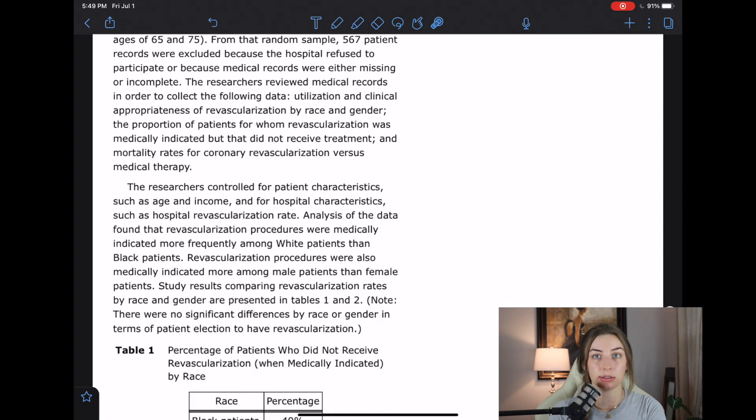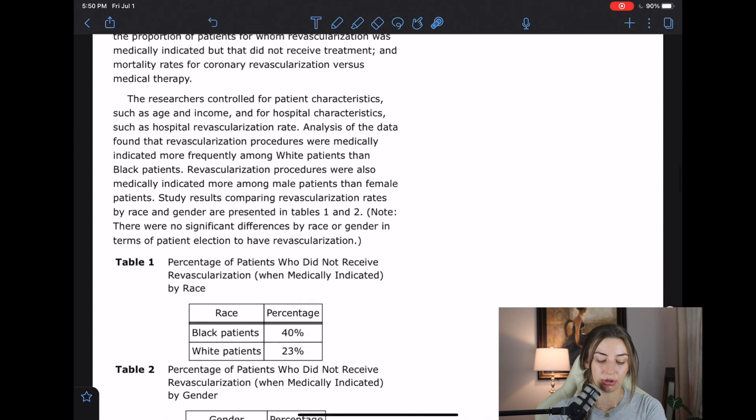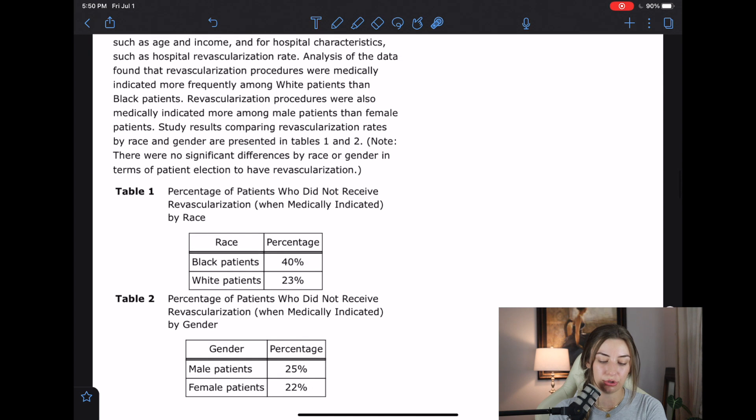So just going over research methods. The researchers controlled for patient characteristics such as age and income and for hospital characteristics such as hospital revascularization rate. Analysis of the data found that revascularization procedures were medically indicated more frequently among white patients than black patients. Revascularization procedures were also medically indicated more among male patients than female patients. Study results comparing revascularization rates by race and gender are presented in tables one and two.